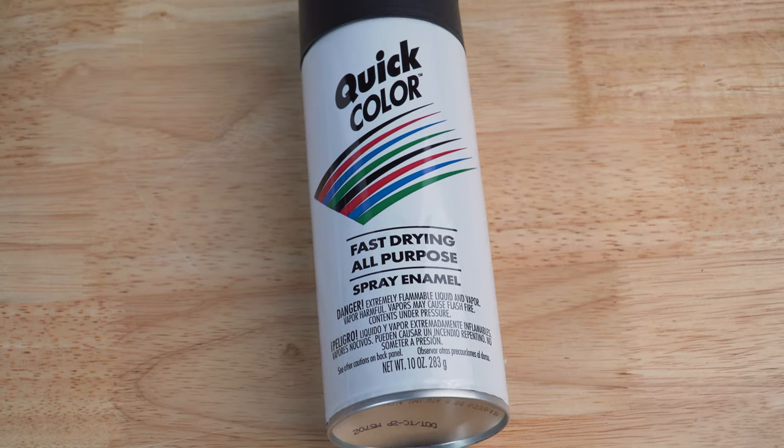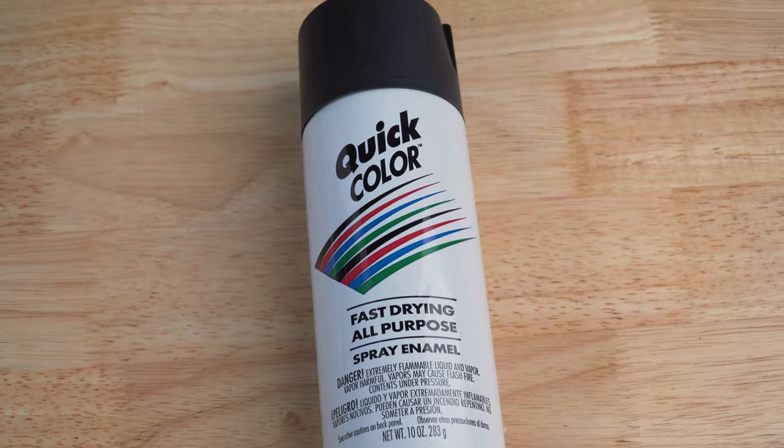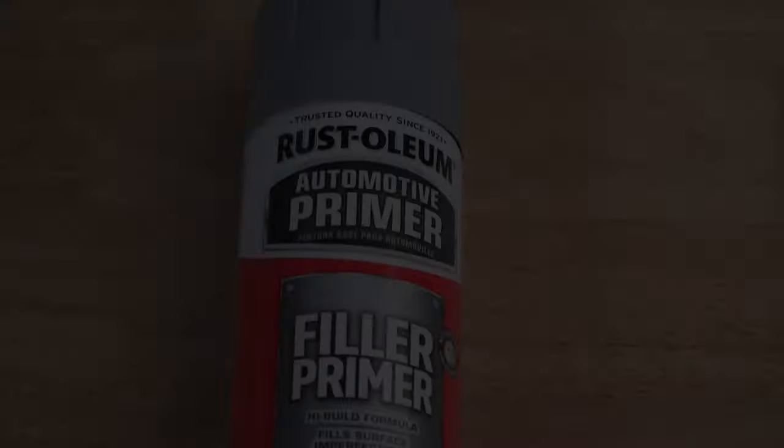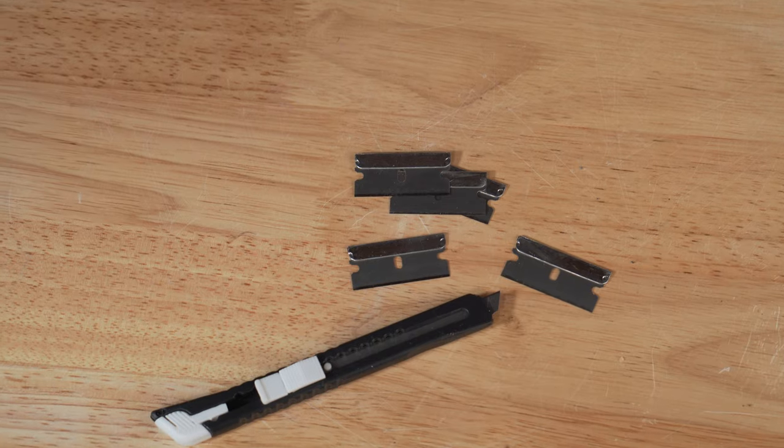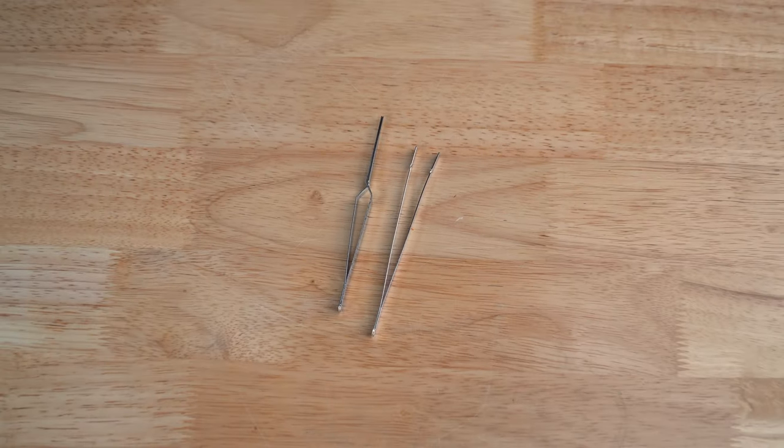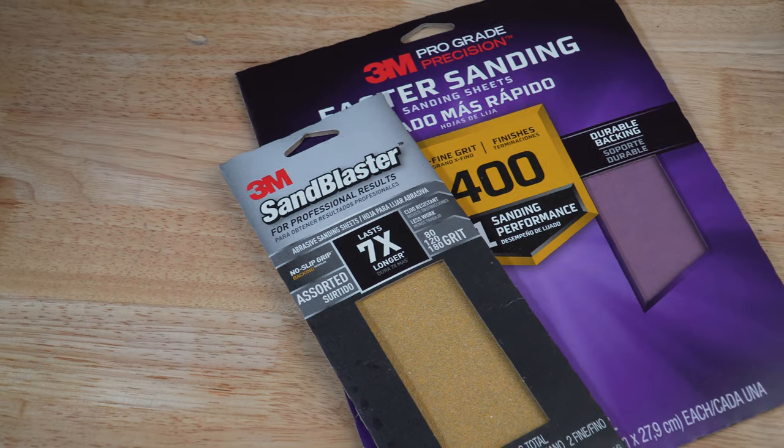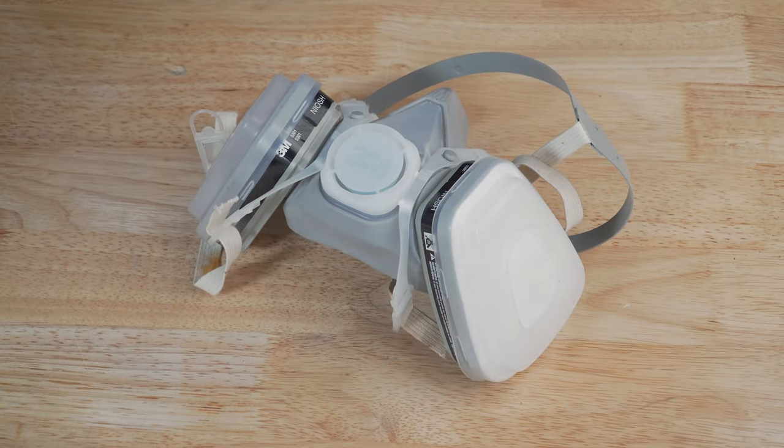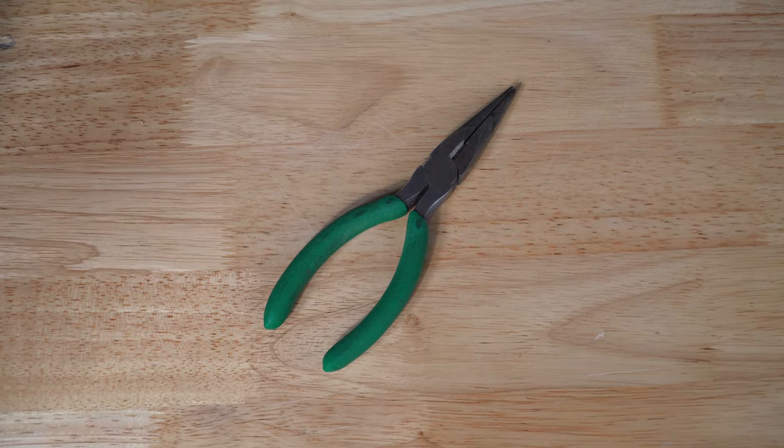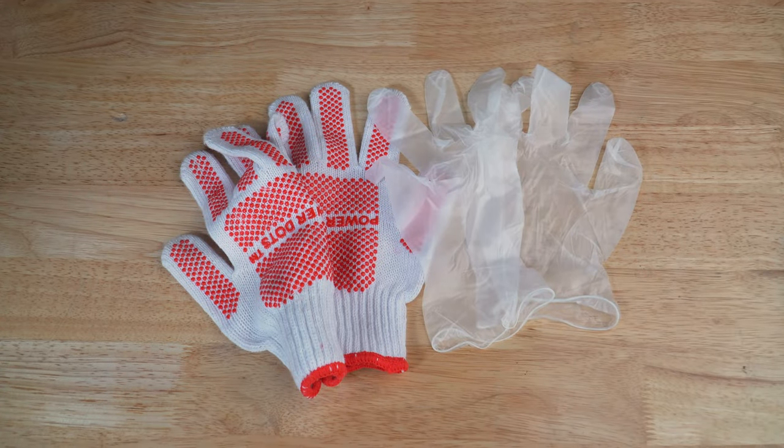Items you will need are: enamel spray paint for plastics, in this case we will be using a matte finish spray paint so no clear coat is needed; Rustoleum filler primer; craft knife or razor blade; tweezers which are optional; sandpaper grits 120 up to at least 400; painting respirator mask; needle nose pliers which are optional; protective gloves; and spot putty.